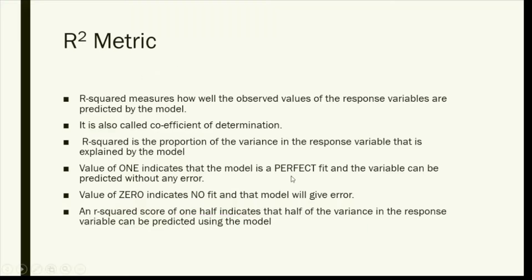All these metrics are just telling me about how good my model is on the predicted values. R-square also measures the same thing - how good my model is, how it's performing on the predicted values. One means perfect fit, zero means no fit, and R-squared of half means it will predict half the values correctly.